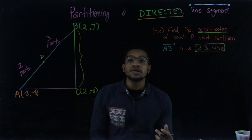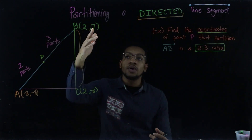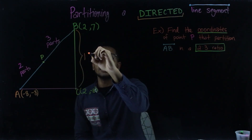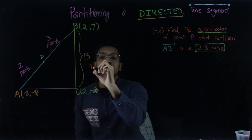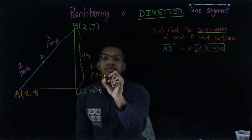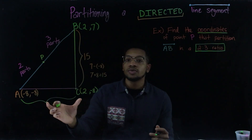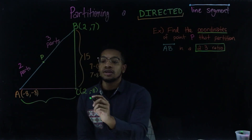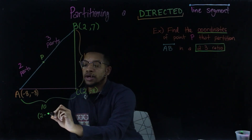Now I can get the lengths of sides BC and AC. For side BC, since there's no horizontal movement I look at the y-coordinates. The y-coordinate at the top is 7 and at the bottom is negative 8, so it went a distance of 15. The easier way to think of that is to take the difference of the y-coordinates: 7 minus negative 8 is the same as 7 plus 8, which is 15. I can do the same thing with the x-coordinates for the horizontal side: 2 minus negative 8 is the same as 2 plus 8, which is 10.